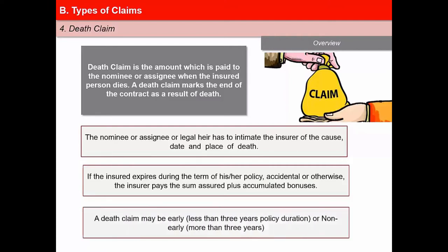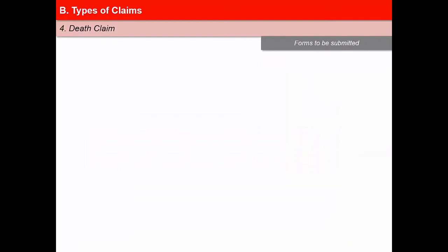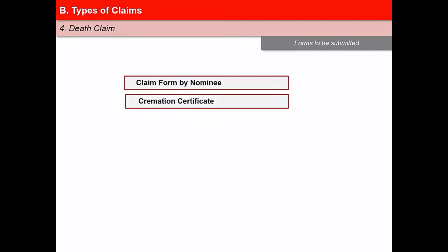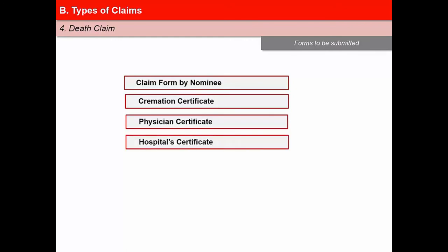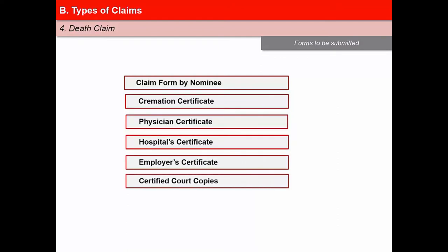A death claim may be early, meaning less than 3 years policy duration, or non-early, meaning more than 3 years. A number of forms are needed to facilitate the processing of a death claim, including certified court copies of police reports such as the First Information Report (FIR), inquest report, post-mortem report, and final report, which are required in case of death by accident.